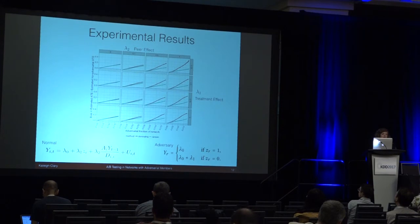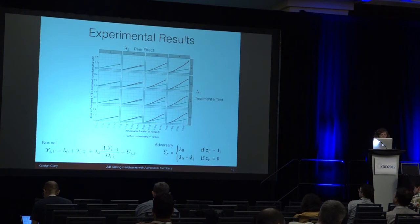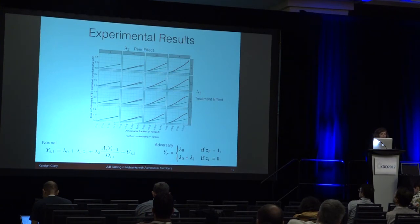We looked at some experiments using stochastic block models, as well as small world networks and scale-free networks. Basically this shows that as we increase the peer effect, the bias goes way up, especially for the dominating case, compared to increasing the treatment effect across the network where it stays relatively the same. We also showed that as you increase the number of adversaries in the network, the bias goes up, which makes sense.